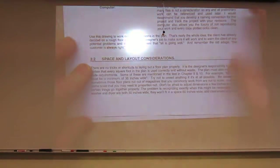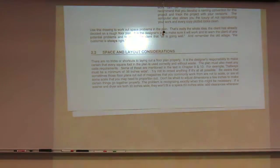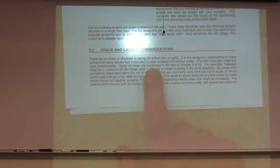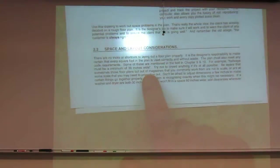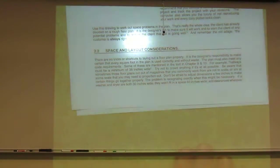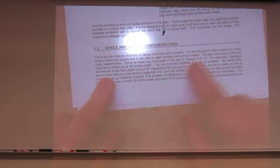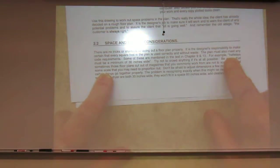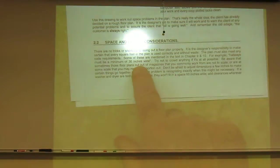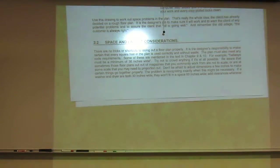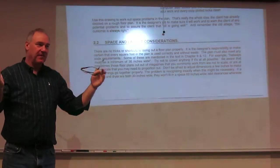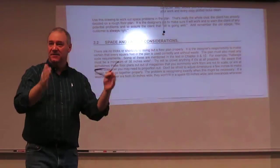Section 2.2 — we're going to talk quite a bit about space and layout considerations. Make a note here: chapter 10 is your best reference on this. You just got to know some things. For example, hallways must be a minimum of 36 inches wide — that's a fire code thing. If you want a house to feel airy and not like a dungeon, the best way to make it feel like a dungeon is to put a long hallway in there that's only 36 inches wide.